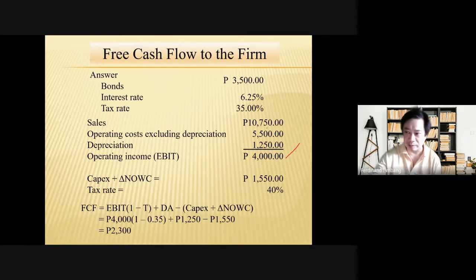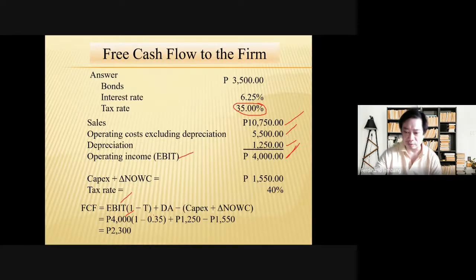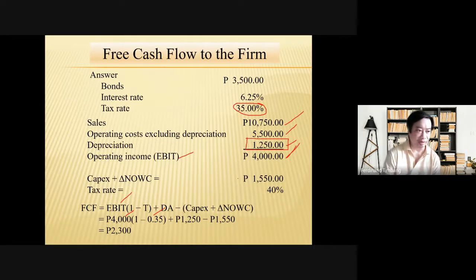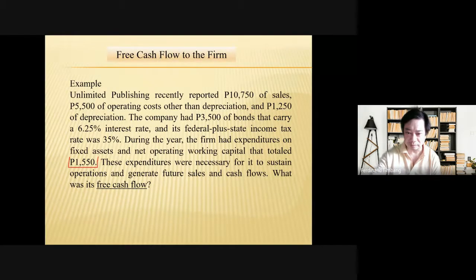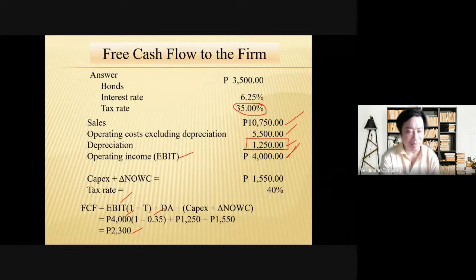The formula is: Free Cash Flow = EBIT times (1 minus T) plus depreciation expense minus CAPEX minus the change in net operating working capital. For the EBIT, we take 10,750 in sales minus operating expenses minus depreciation expense to get operating income, which is also our EBIT of 4,000. Then 4,000 times (1 minus 0.35) plus 1,250 depreciation minus 1,550 CAPEX and working capital. The result is a free cash flow of 2,300.